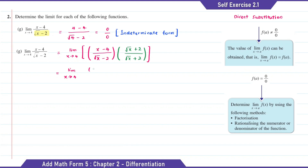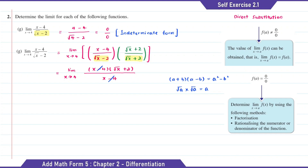The conjugate for the denominator will be square root x plus 2 over square root x plus 2. So for the numerator part, it will be (x minus 4) times (square root of x plus 2). For the denominator part, after we expand it, we get x minus 4. So here we can cancel the x minus 4. Now substituting x with 4, this is equal to square root 4 plus 2, which is equal to 2 plus 2. The answer is 4.